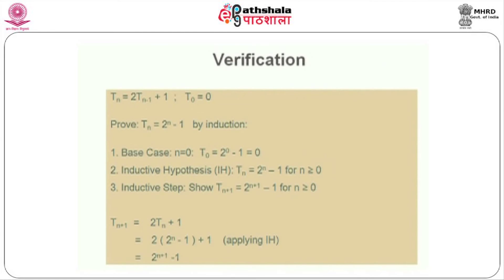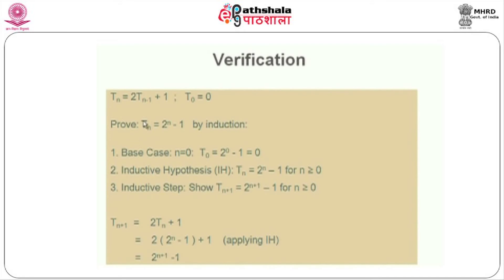Once we guess that, let us try to verify this using the concept of mathematical induction. If the hypothesis is true for n, and we are able to prove that for n+1 it is also true, then we can say the hypothesis is true. Let us consider 2^n - 1 as the hypothesis. The base case is n = 0: substituting gives 2^0 - 1 = 0, so the hypothesis is true for n = 0.